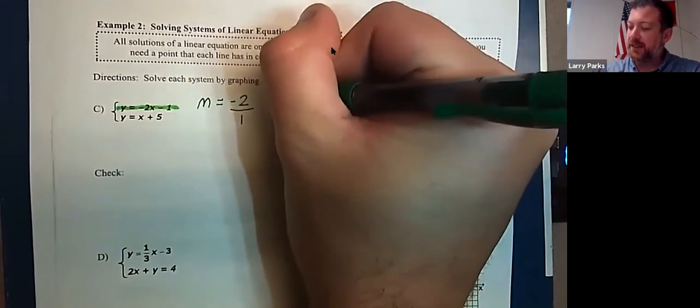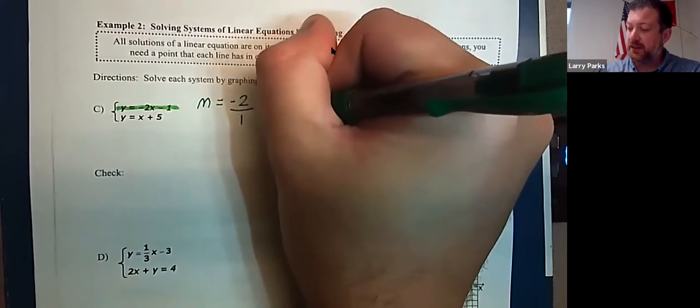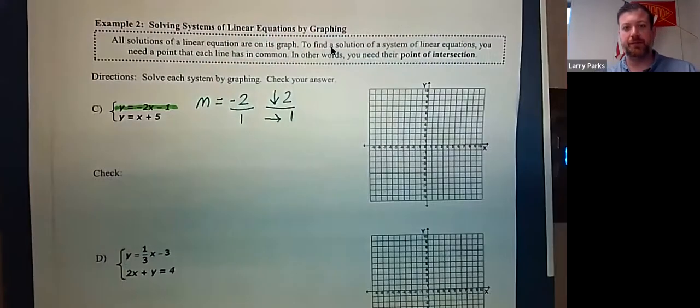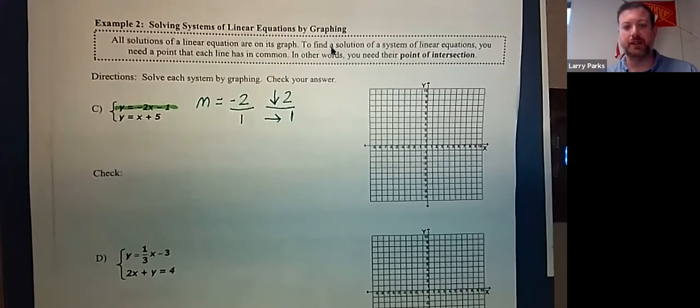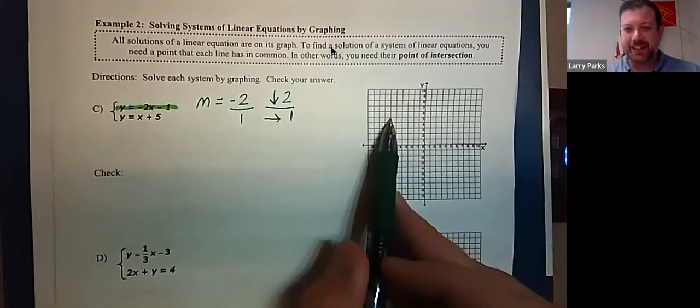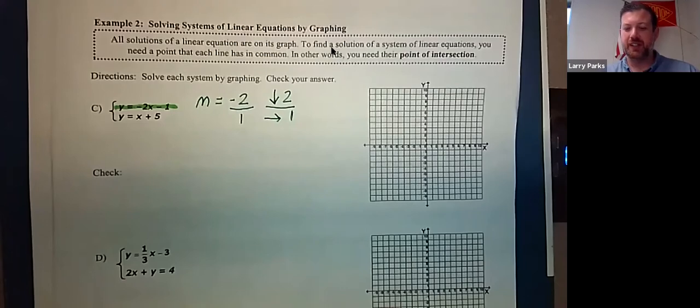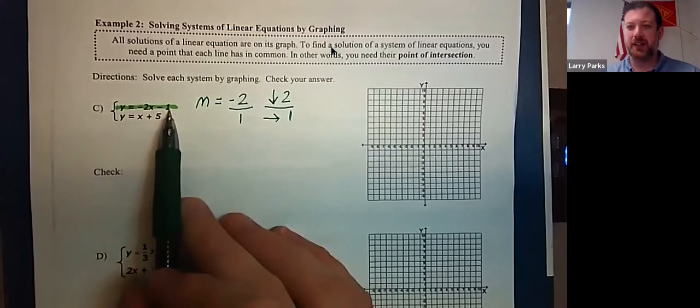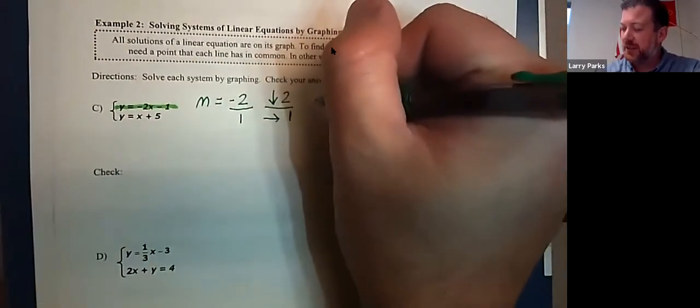And what that means is you go down 2 over 1. Now, where do you start? Say we start here, you go down 2 over 1, down 2 over 1, but you've got to know where to start. And where you know to start is what we call the b, the y-intercept. So our b is negative 1. That tells us where to start.